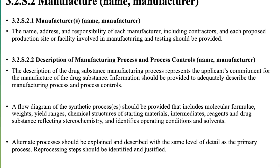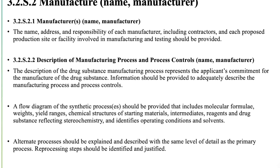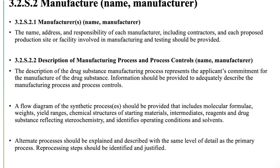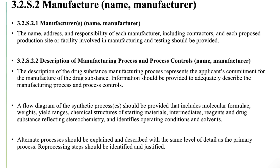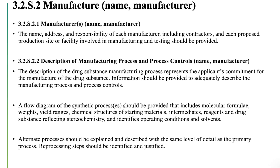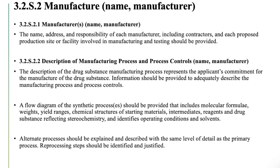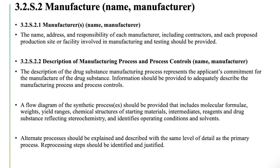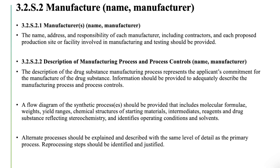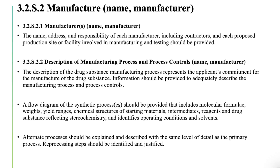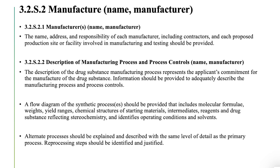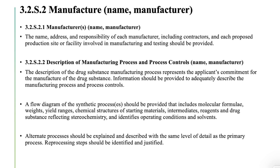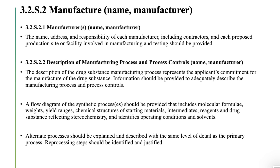3.2.S.2.2 Description of Manufacturing Process and Process Controls (Name, Manufacturer): The description of the drug substance manufacturing process represents the applicant's commitment for the manufacture of the drug substance. Information should be provided to adequately describe the manufacturing process and process controls. A flow diagram of the synthetic process should be provided that includes molecular formulae, weights, yield ranges, chemical structures of starting materials, intermediates, reagents, and drug substance reflecting stereochemistry, and identifies operating conditions and solvents. Alternate processes should be explained and described with the same level of detail as the primary process. Reprocessing steps should be identified and justified.